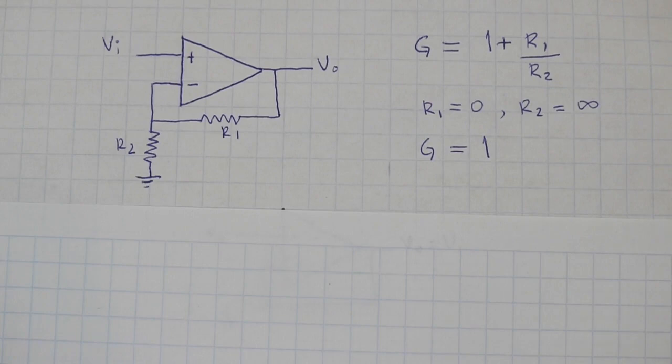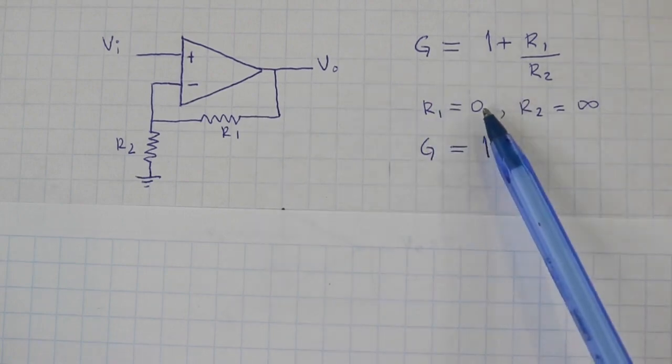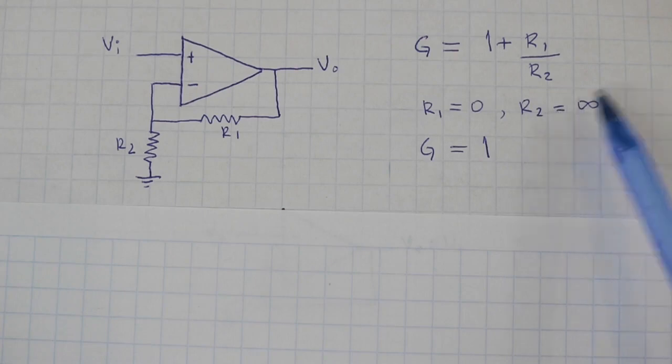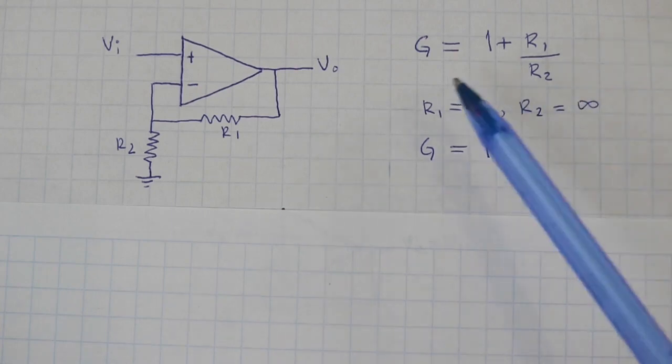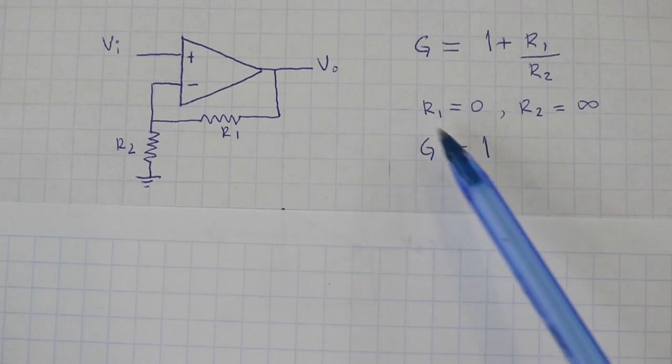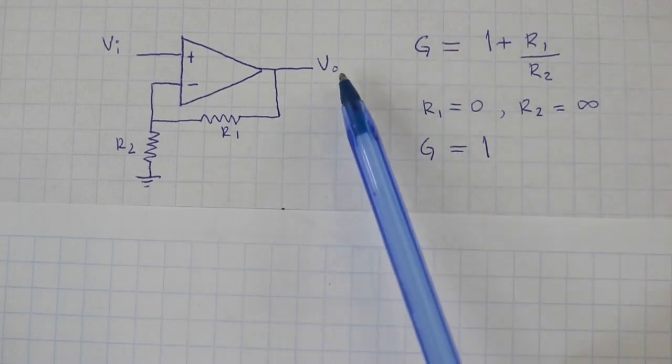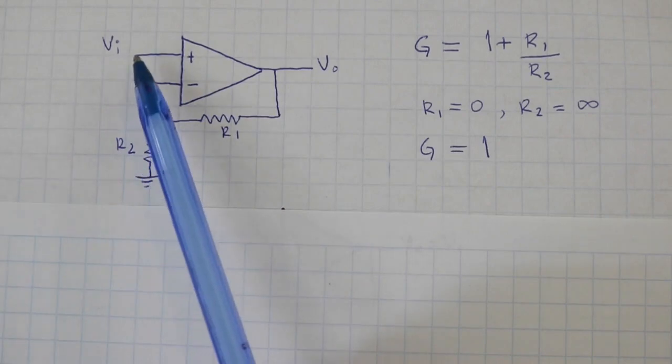Now, imagine that we make R1 equal to 0 and R2 equal to infinity. Then, from the formula, we can see that the gain will be 1, that is, the output voltage will be equal to the input voltage.